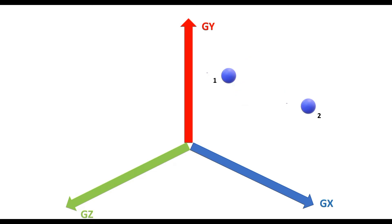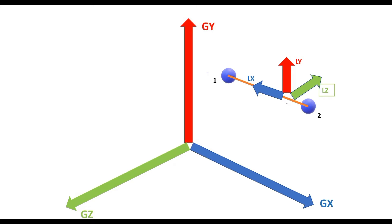What would happen if the same pair of nodes has the member defined from node 2 to node 1? The local X axis will be defined from the start node to the end node and thus will be parallel to the global X axis, but its direction would be opposite to the positive direction of the global X axis. Again, the local Y axis in the default orientation is placed parallel to the global Y axis, and as per the right-hand thumb rule, this determines the direction of the local Z axis. So this is our beta-0 configuration where the local X axis is parallel but opposite in direction to the global X axis.